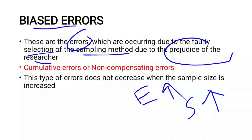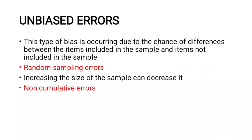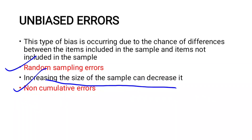In the case of unbiased errors, this type of error occurs due to chance differences between the items included in the sample and the items not included — those that remain in the population. These errors arise randomly due to the specific members selected in the sample, not due to any systematic fault.